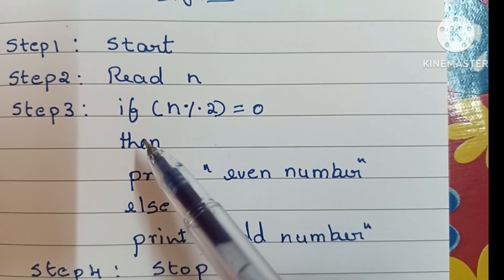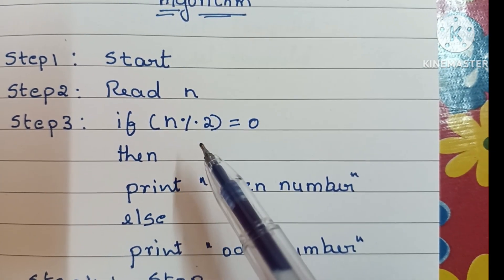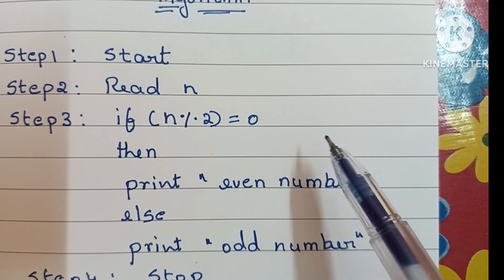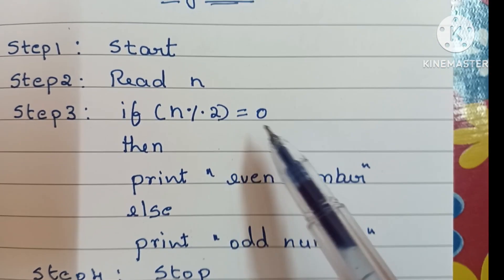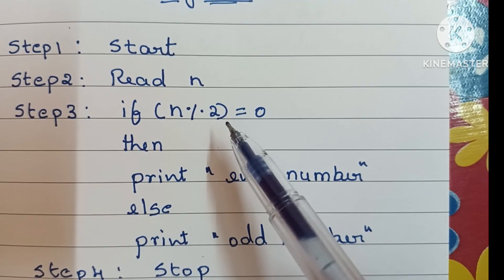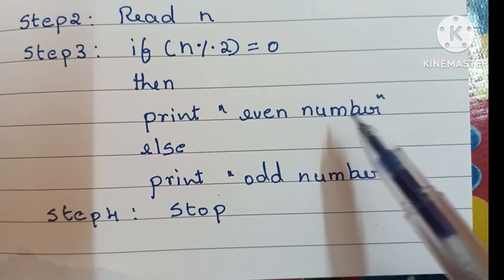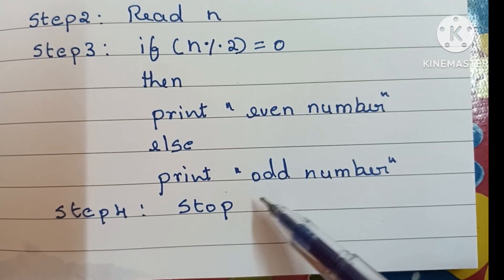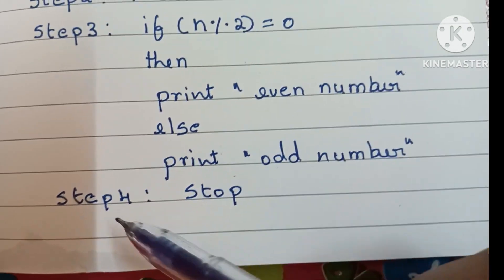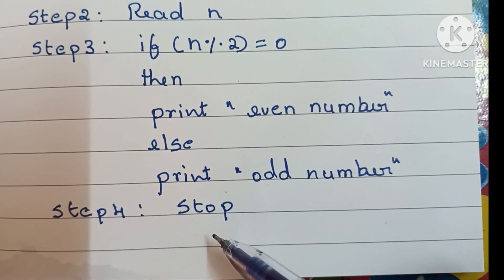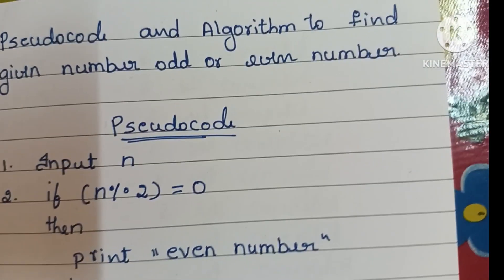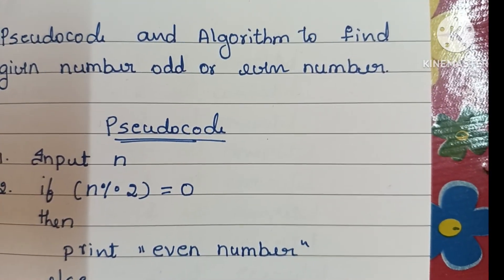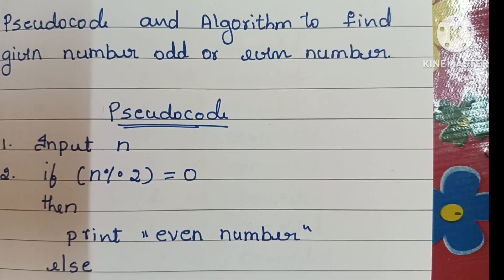In step 3, we check if n modulo 2 is equal to 0. If this condition is true, then we print even number; else we print odd number. In step 4, we stop the algorithm using the stop statement. So guys, this is the pseudocode and algorithm to find whether a given number is odd or even.